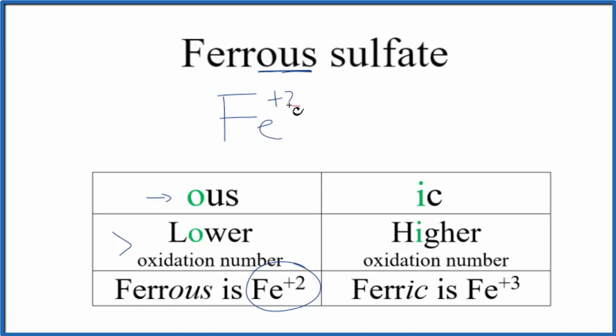So we have Fe with that +2, and then the sulfate - this is one you need to remember or look up on a table of common polyatomic ions. This is SO4, its oxidation numbers add up to its charge, so that's the -2. Since these are the same, this is the formula for ferrous sulfate: FeSO4.